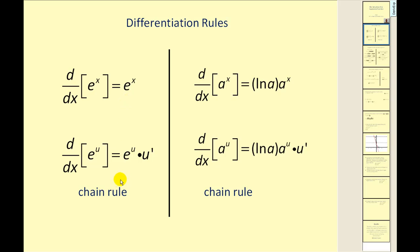The second formula applies the chain rule. If the exponent is some function in terms of x, we apply the chain rule and the derivative would be e to the u times u prime. Now if the base of the exponential is not e, the derivative has an extra factor of natural log a times a to the x. And if we have a raised to some function in terms of x, we apply the chain rule: natural log a times a to the u times u prime.